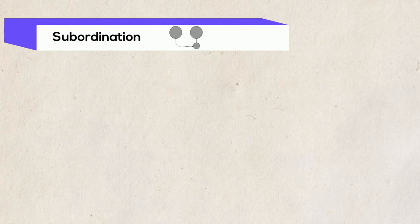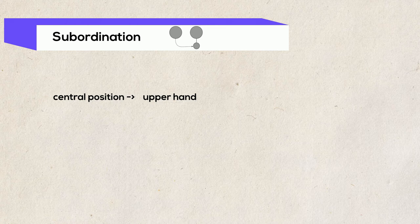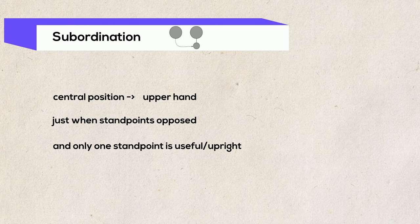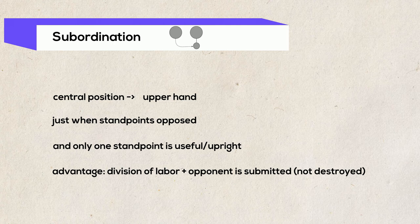Subordination means that the conflicting party who takes the more central position — king vs. subject — has the upper hand. The solution variant is only possible if two contradicting standpoints are opposed, whereby only one proves to be upright or useful, and the opponent accepts this contradicting point of view, albeit involuntarily. The advantage of this variant is the division of labor. Enemies were not destroyed but submitted. The subordinate person could hope that the situation would be reversible. Let's observe a business meeting.